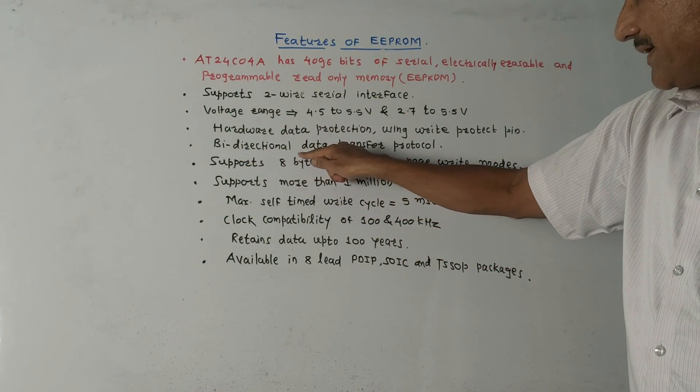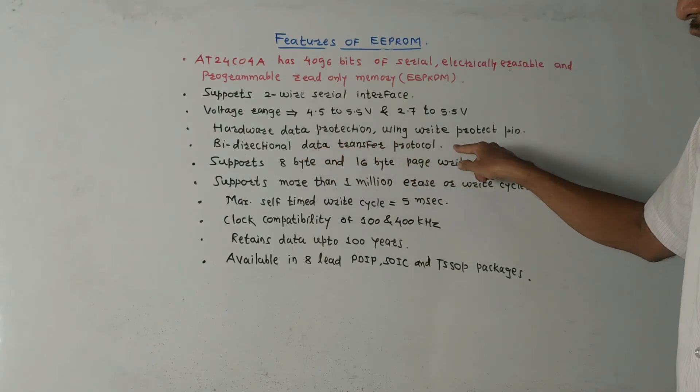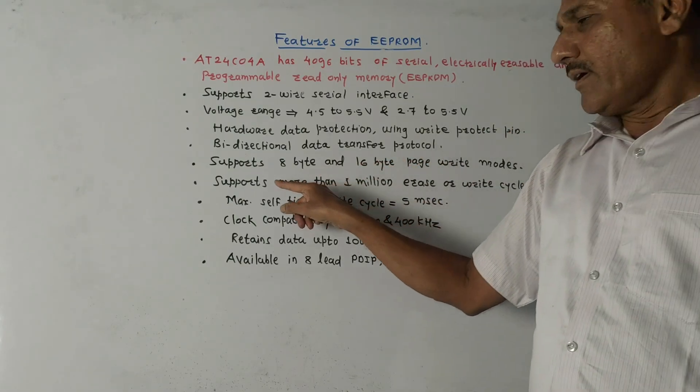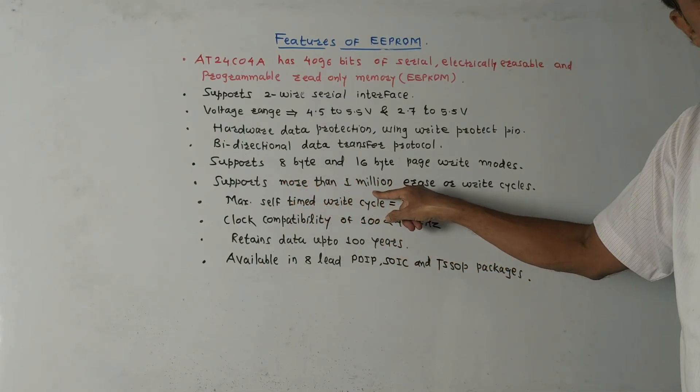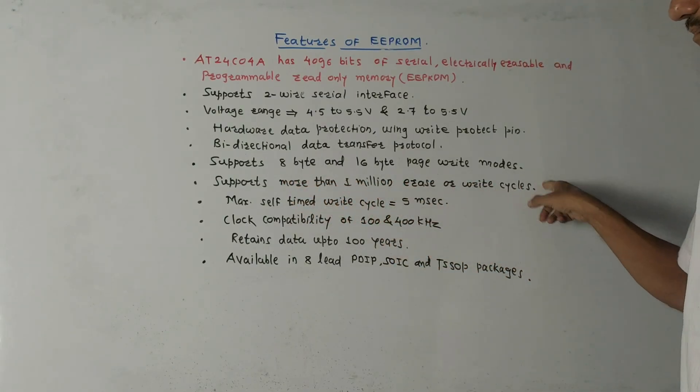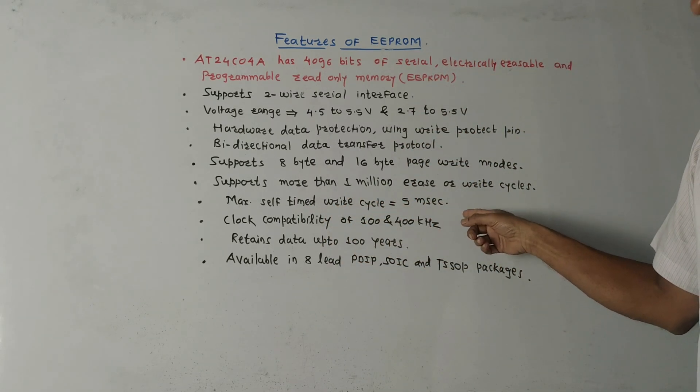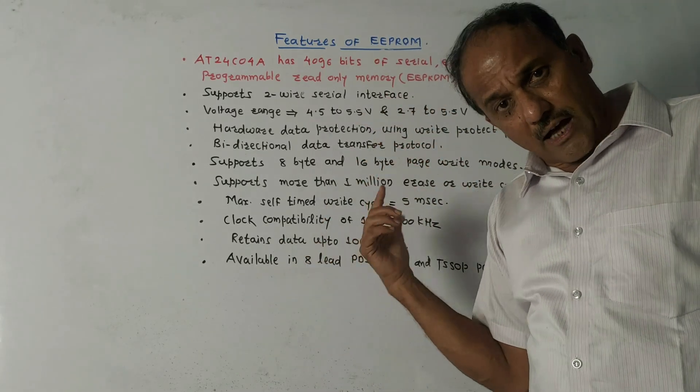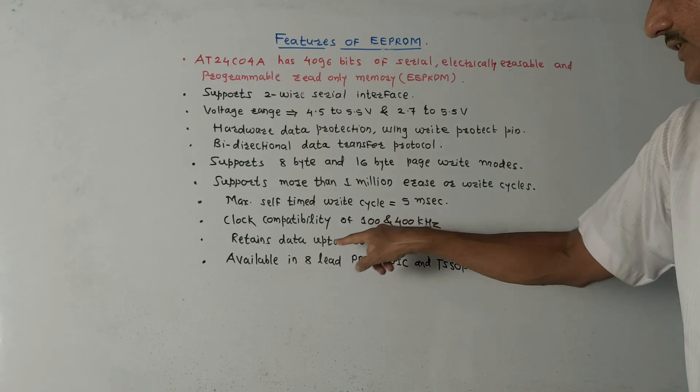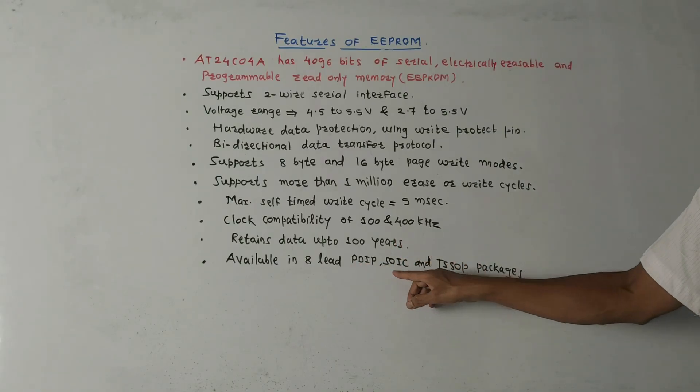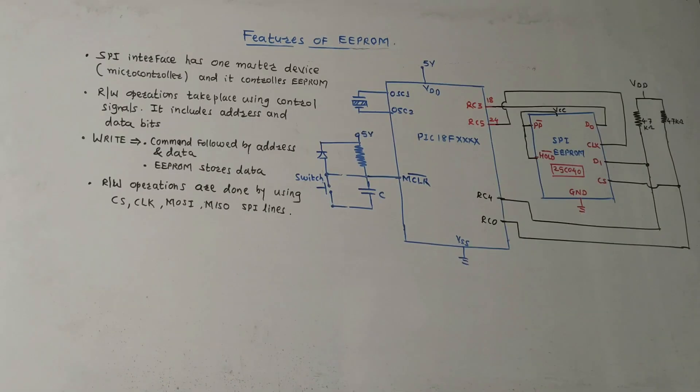It is bidirectional data transfer protocol. It supports 8 byte and 16 byte page write modes. It supports more than 1 million erase and write cycles. Maximum self-timed write cycle is 5 milliseconds. Clock compatibility is around 100 kilohertz and 400 kilohertz. It retains data up to 100 years and is available in 8-lead PDIP, SOIC, and TSSOP packages.